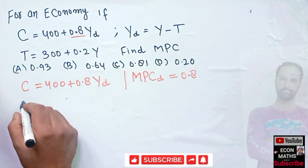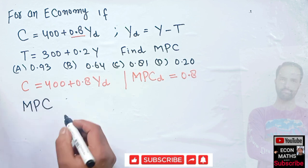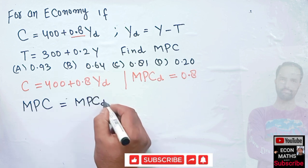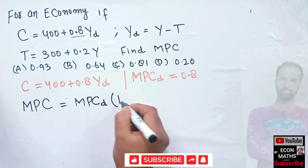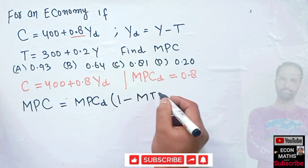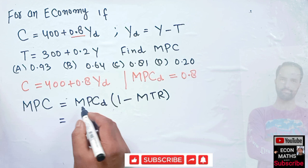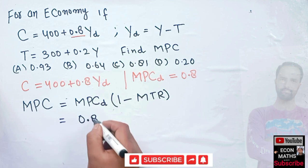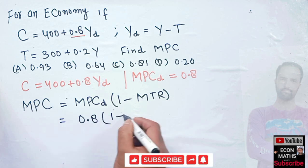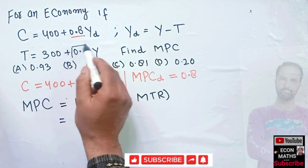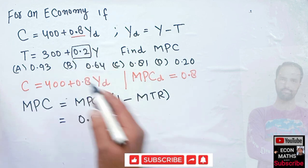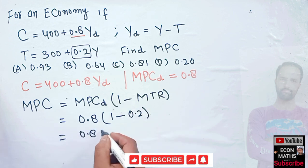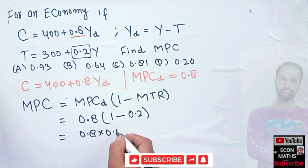The relation is simple. Marginal propensity to consume is equal to marginal propensity to consume of disposable income multiplied by (1 minus marginal tax rate). We have MPC of disposable income as 0.8, and the marginal tax rate is 0.2, so we compute 0.8 into (1 minus 0.2).